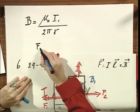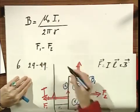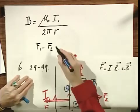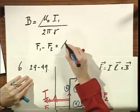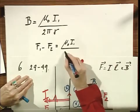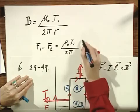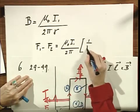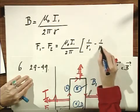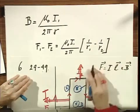So the force F1 minus F2, which is the force in this direction, will therefore be mu-zero times I1 divided by 2π, and I have one over R1 minus one over R2. And that is the force.